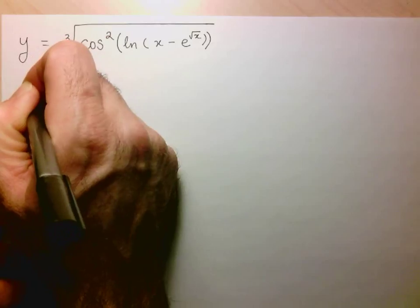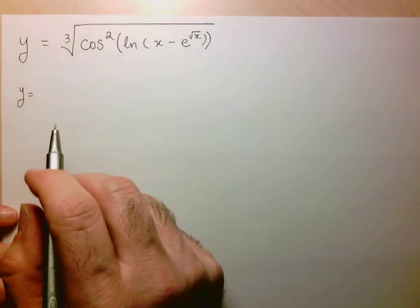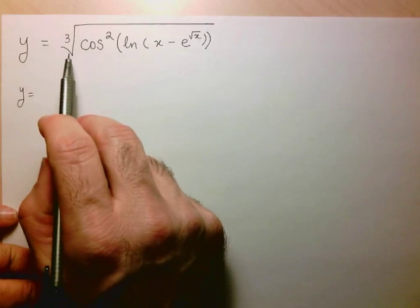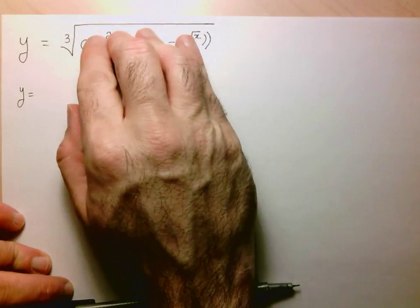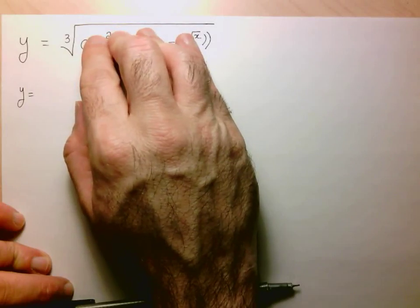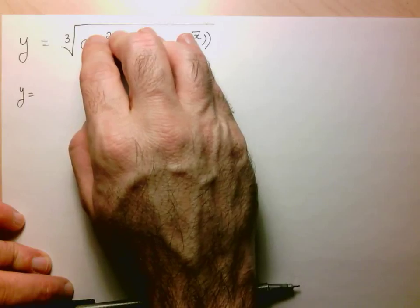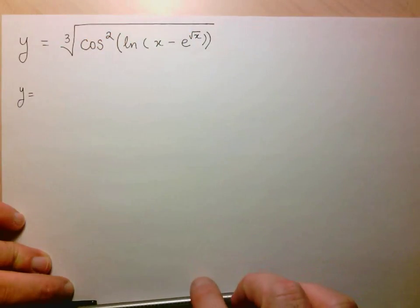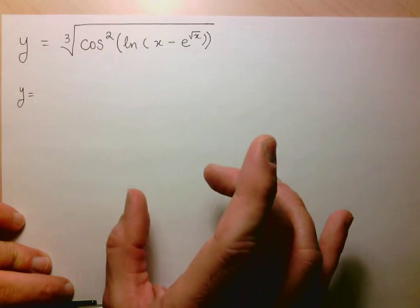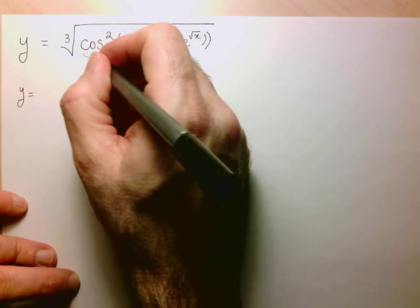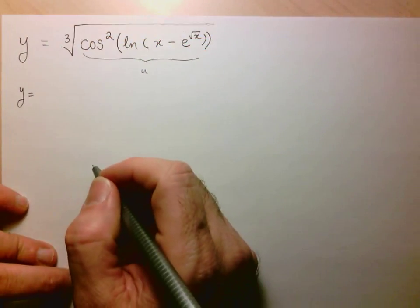The first thing I'm going to look at here is I just notice that I have some expression under a cube root, so in other words some expression to the exponent of 1/3. I don't care what this expression is, I just know that it's to the exponent 1/3. Notice how we're starting from outside and we're going to move inward. So this whole expression here is my u.